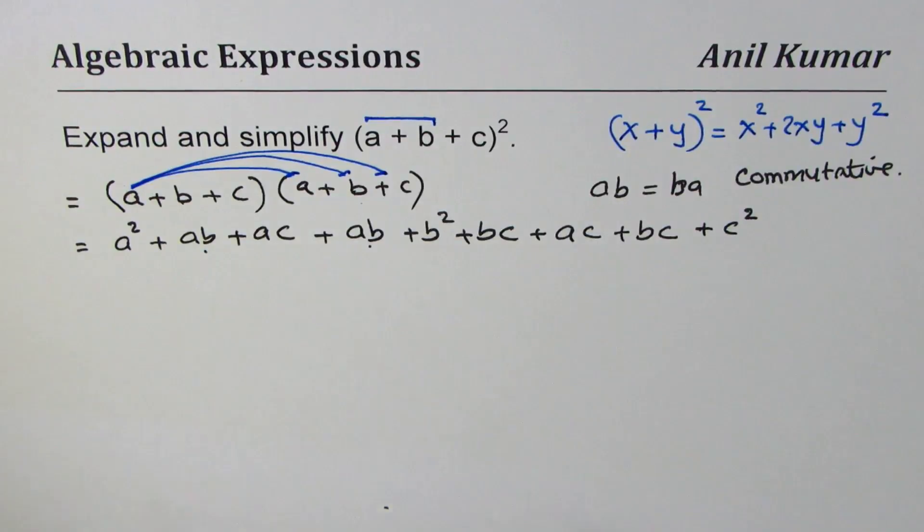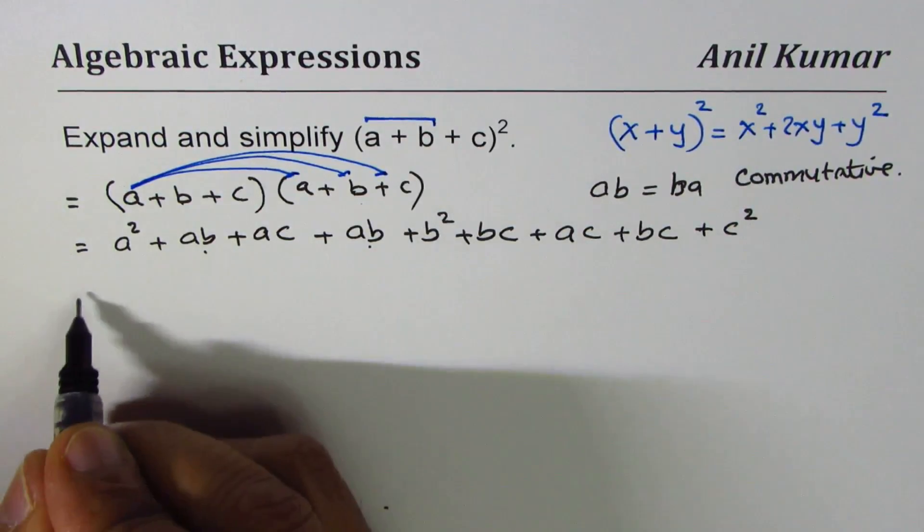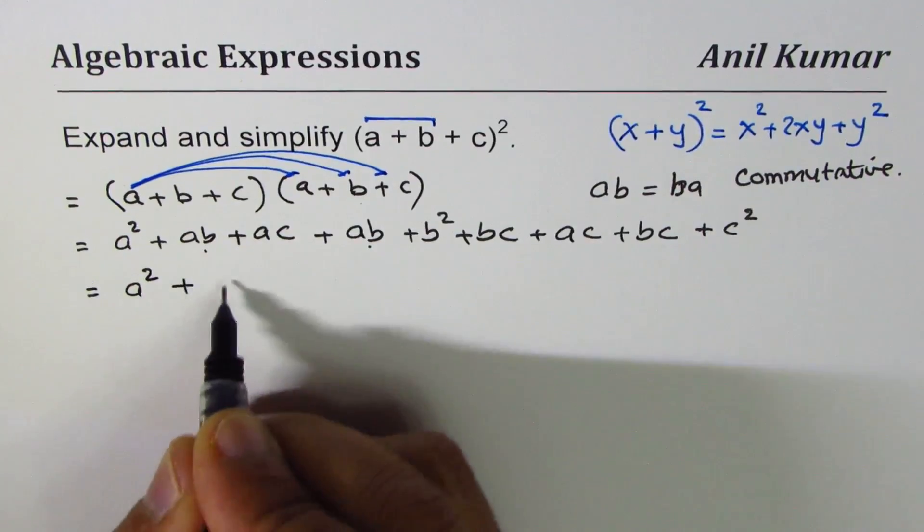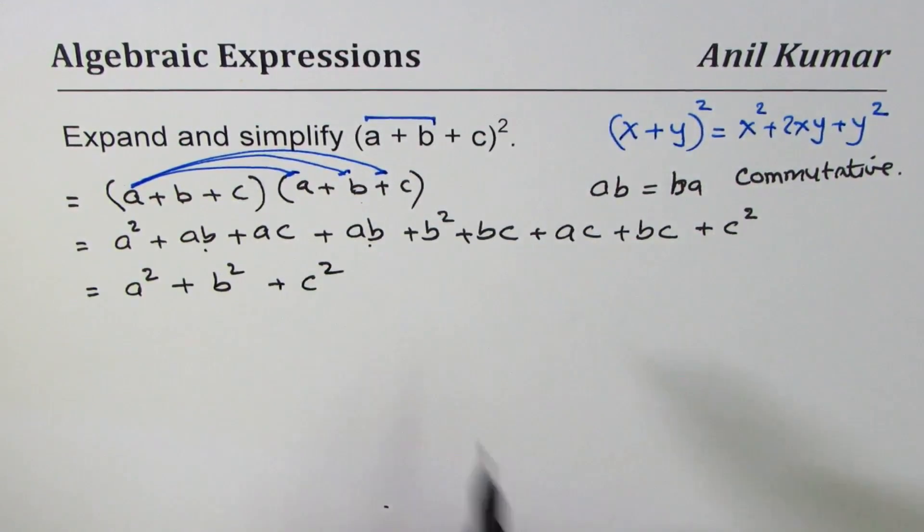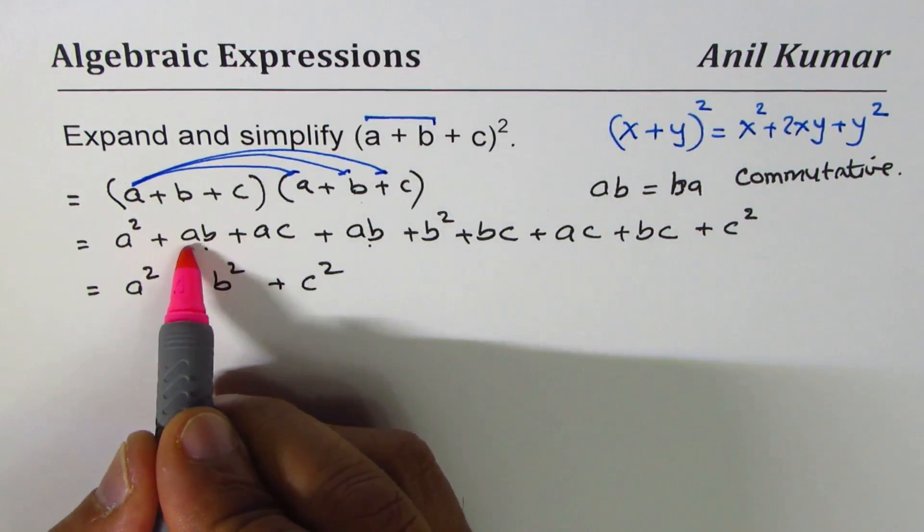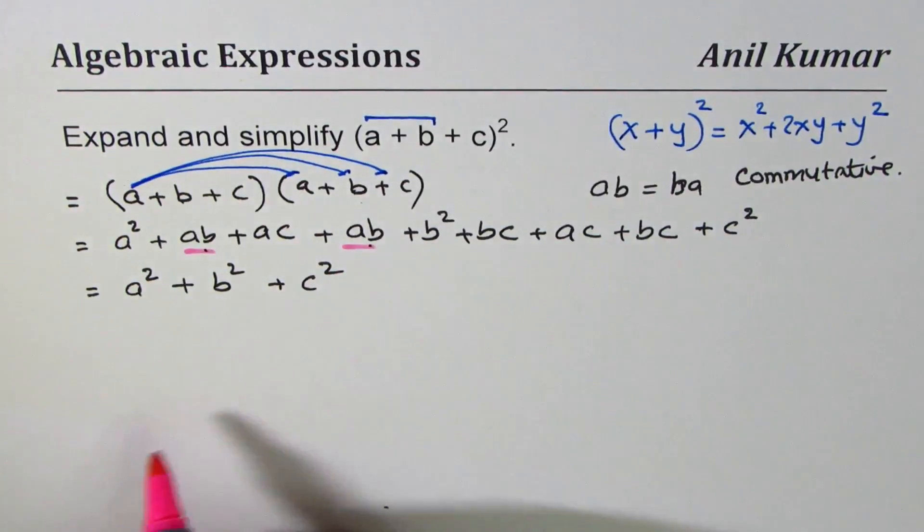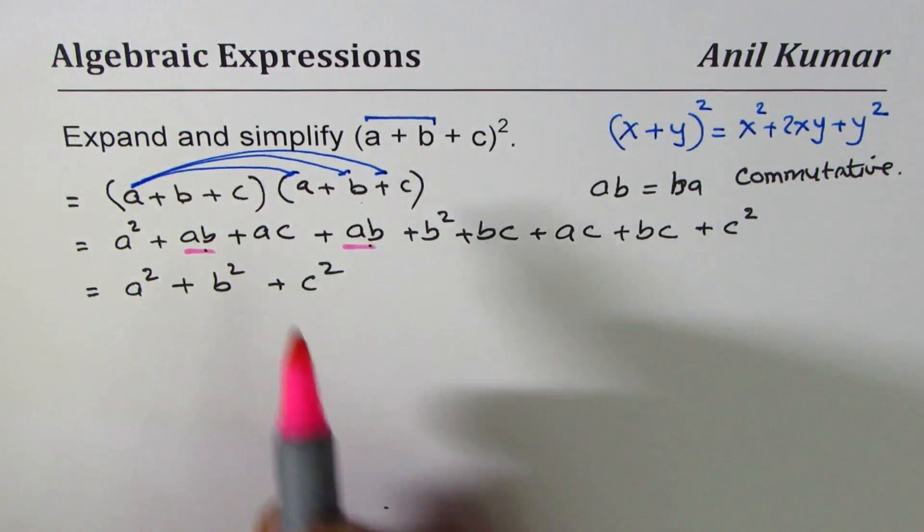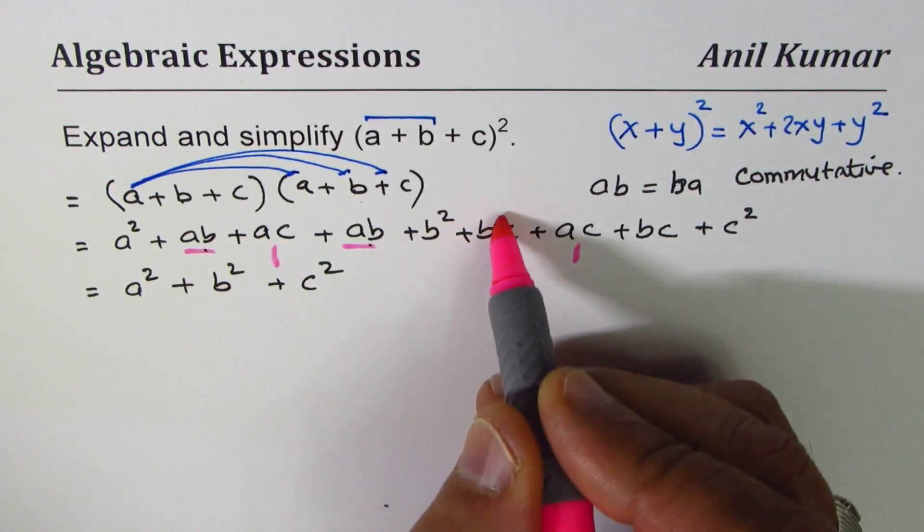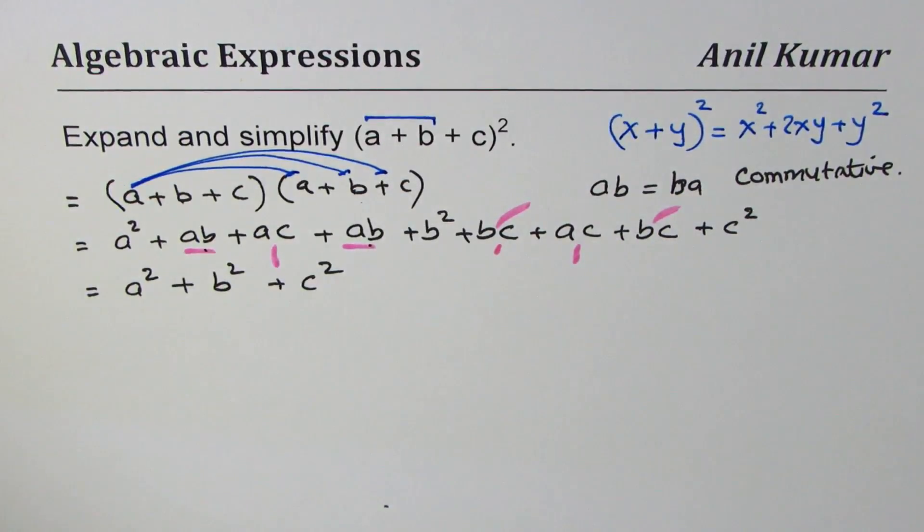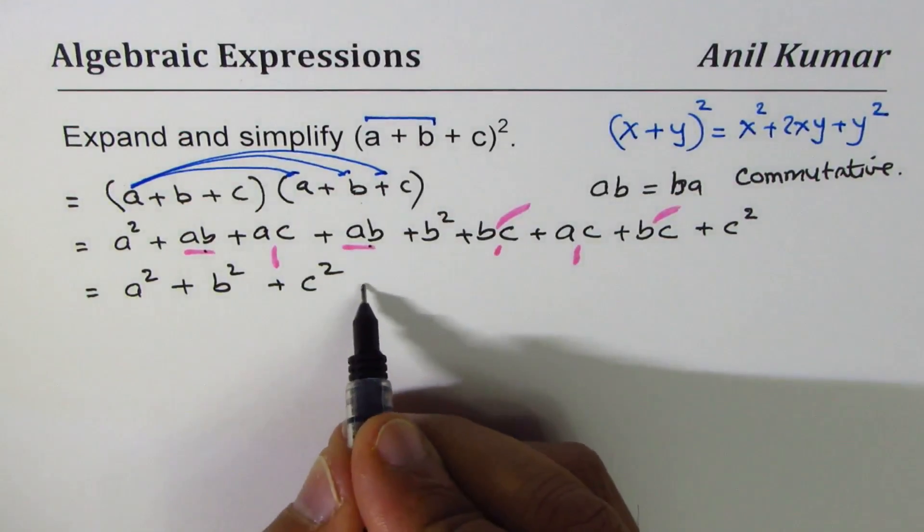So what do you notice here? You notice that we have three square terms, so we could write this as a² + b² + c². We have taken care of those square terms. Now we'll take care of terms like ab. There are two ab's, similarly you find two ac's, and then you find two bc's.